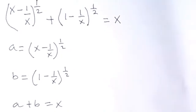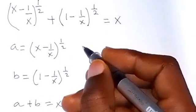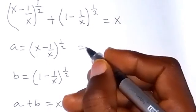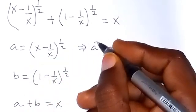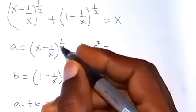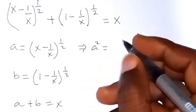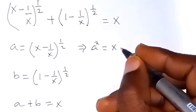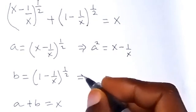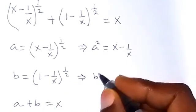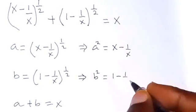From here we can write this again and square both sides. When we square both sides, A squared equals — squaring cancels the power of one half — so A squared equals x minus 1/x. And squaring the other side as well, B squared gives us 1 minus 1/x.